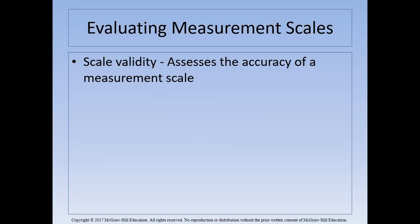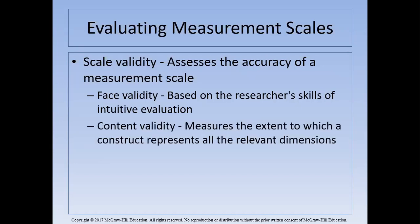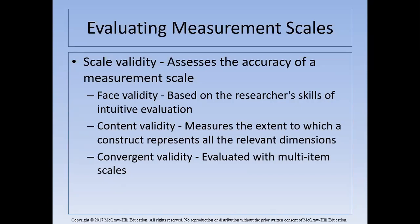Validity is different from reliability — it assesses the accuracy of what the scale is measuring. For example, saying the temperature is 50°F is valid in the USA but not valid in Canada where we use Celsius. Content validity and convergent validity evaluate a multi-item scale to confirm it measures what it is supposed to measure, even from different angles, and still drives to the same construct result.